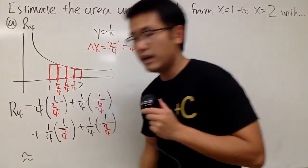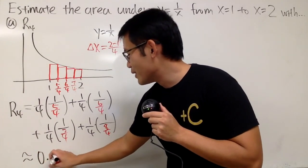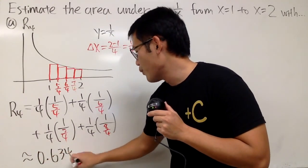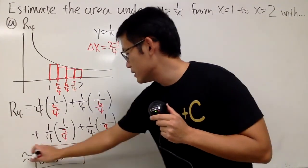Anyway, here we actually just use the calculator, and I'll tell you, if you work that out, you'll get approximately 0.6345 and all that good stuff. So this is the answer for R4.